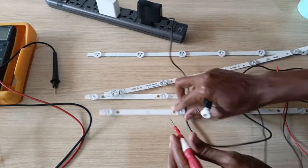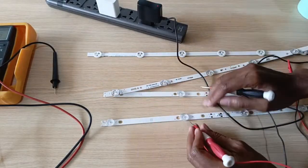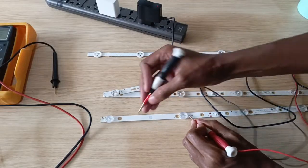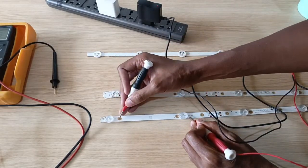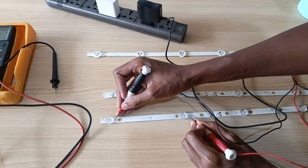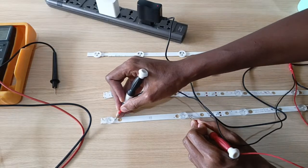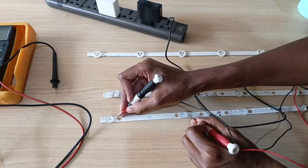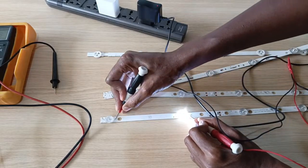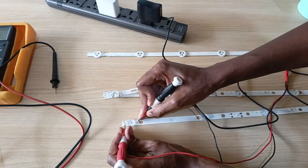And just use the positive lead and the negative lead, which is the black one, on the negative. And you can see the light actually works. So using this method, you can actually test every single LED to see if it's working.